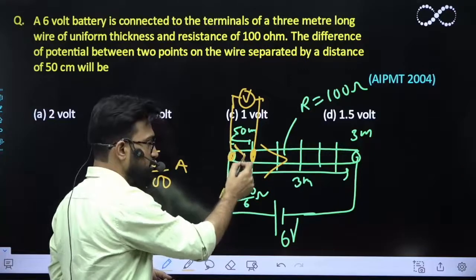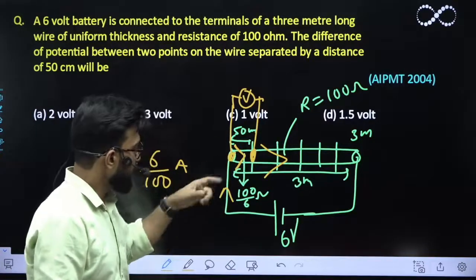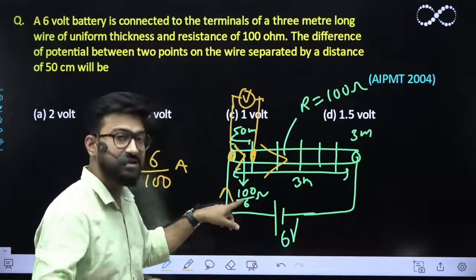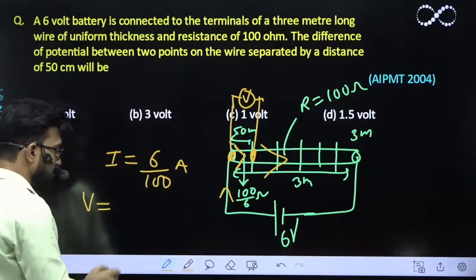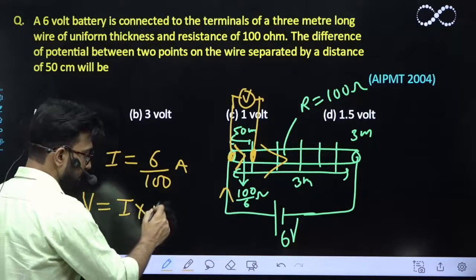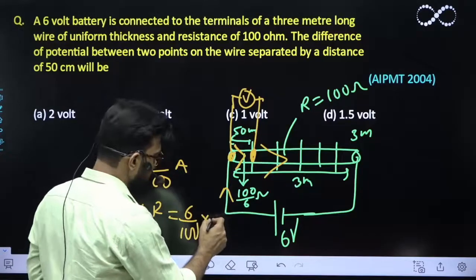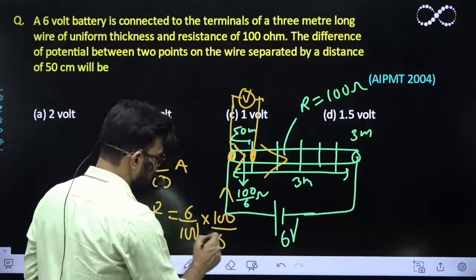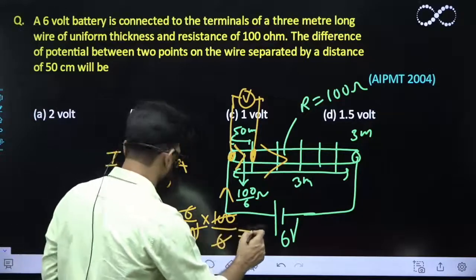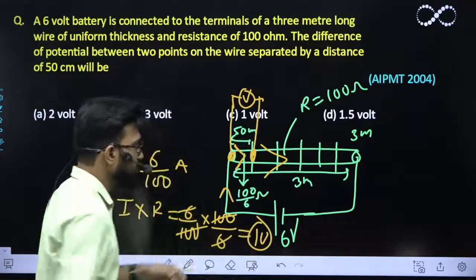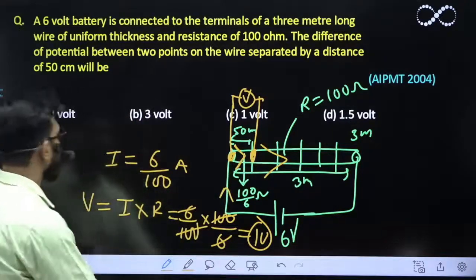Same current would flow through this 50 centimeter length of the wire and its resistance is also given to you. So you can easily find out using Ohm's law, the potential difference across these two terminals would be equal to I into R, which is equal to 6 by 100 times 100 by 6. So 100 will cancel out, 6 will cancel out, so it comes out to be 1 volt.